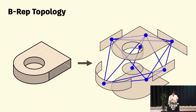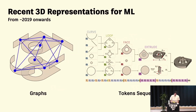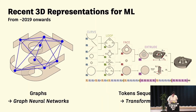Up until about 2019, most of the work with 3D representations for machine learning involved just sampling points on a B-rep, or rendering an image, and using existing ML models — essentially avoiding the problem by using well-known representations. Since around 2019, almost all of our work is either looking at a graph representation like the face adjacency graph, or some kind of sequence — meshing the B-rep into a token sequence. Graphs work well with graph neural networks for learning representations, and transformers work well for sequences and generation tasks.